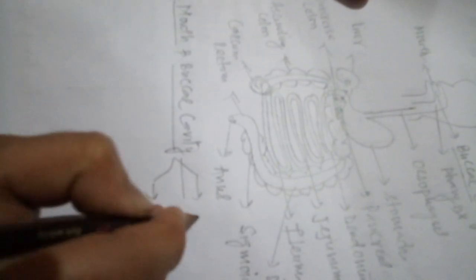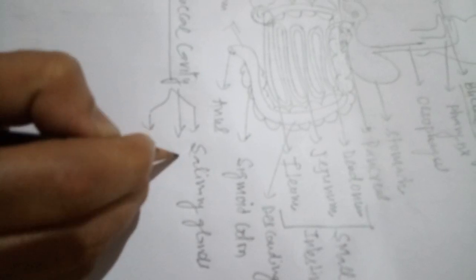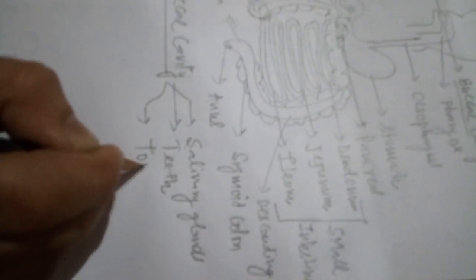The buccal cavity contains three important components: number one, salivary glands; number two, teeth; number three, tongue. The salivary glands — there are three pairs of salivary glands present inside our buccal cavity. These salivary glands secrete saliva, which helps in the digestion of starch, kills microorganisms, and provides a sliding surface to engulf the food into the stomach easily.